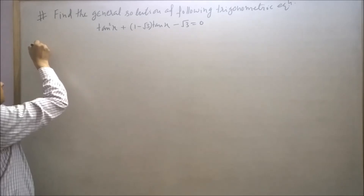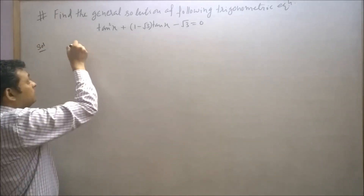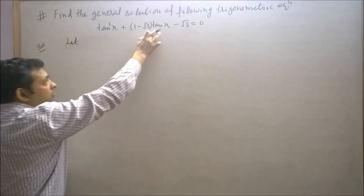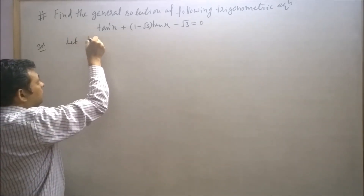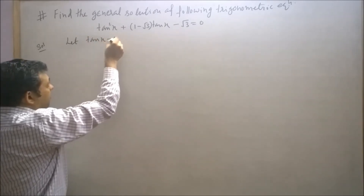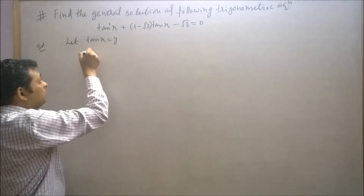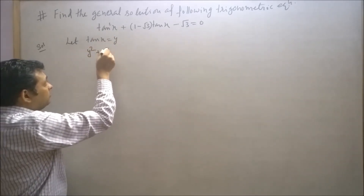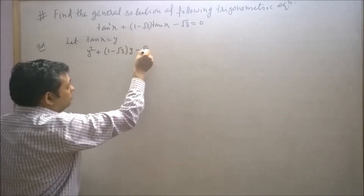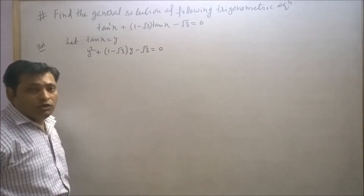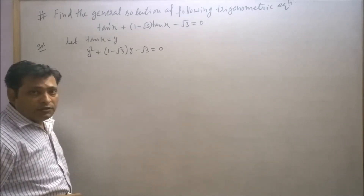Let tan(x) = y. Then this equation can be represented as y² + (1 - √3)y - √3 = 0. Now we will find the value of y using the discriminant method.